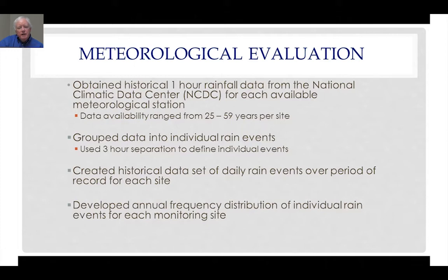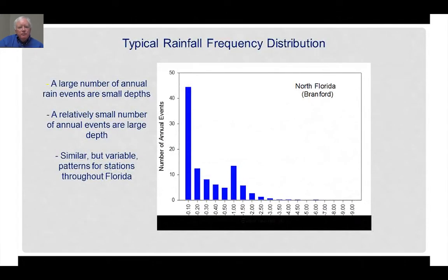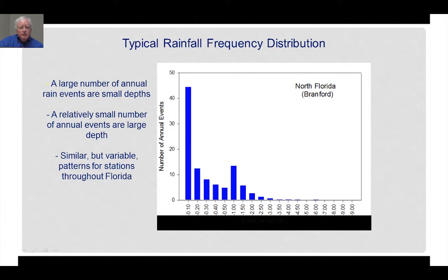We created a historical dataset of daily rain events over the available period of record for each of the 45 rainfall hourly recording sites. At most sites, that included a data range of approximately 25 to almost 60 years per site. In summarizing that data, we developed rainfall frequency distributions for each of the 45 sites, all of which look similar to the diagram shown in the figure for the Branford recording site. Most of the rain events that occur within the State of Florida are relatively small — a tenth of an inch or less — and at the Branford site there were about 45 rain events each year in this range.